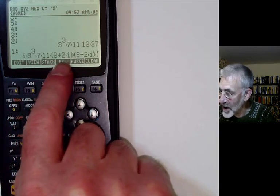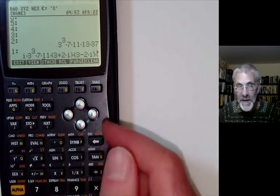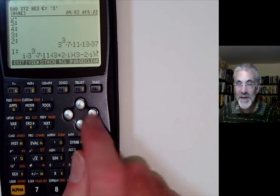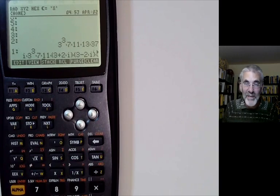We have i times 3 cubed times 7 times 11 as expected. Then it's 3 plus 2i times 3 minus 2i. So what's going on there? Well, it's factored this number in the Gaussian integers. You know, 13 is equal to 3 plus 2i times 3 minus 2i.